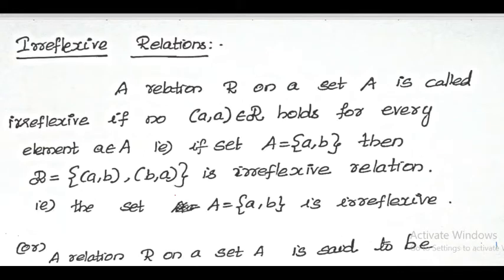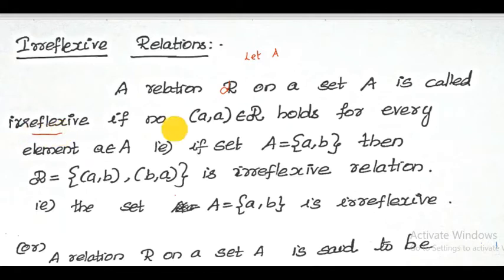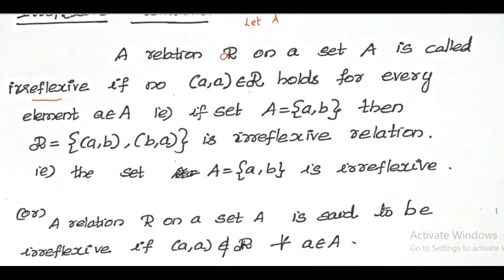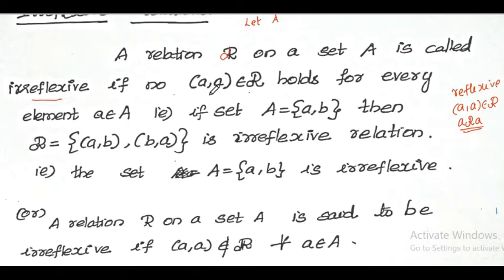Hello students, welcome to this channel. Today we are going to learn the topic: irreflexive relation. Let A be a set and we define a relation R. The relation R is said to be an irreflexive relation if no (a, a) belongs to R — which means (a, a) does not belong to R. Reflexive means (a, a) belongs to R, so irreflexive is the negation of that. If (a, a) does not belong to R, that relation is called irreflexive.